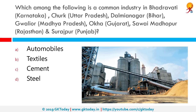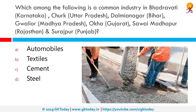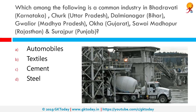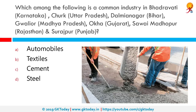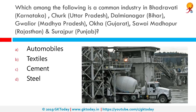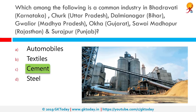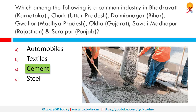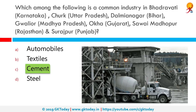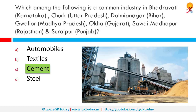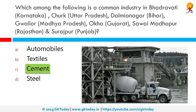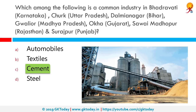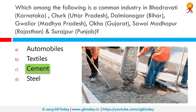Which common industry is found in Bhadravati (Karnataka), Chark (Uttar Pradesh), Dalmianagar (Bihar), Gwalior (Madhya Pradesh), Oka (Gujarat), Sawai Madhopur (Rajasthan), and Surajpur (Punjab)? That would be the cement industry. The Indian cement industry comprises 125 large cement plants with an installed capacity of 148.28 million tons and more than 300 mini cement plants with an estimated capacity of 11.10 million tons per annum. The Cement Corporation of India is a central public sector undertaking with 10 units.